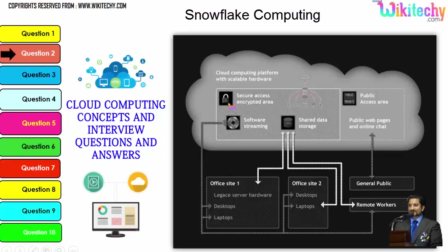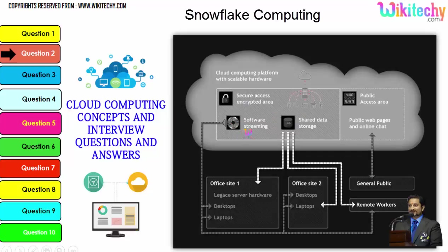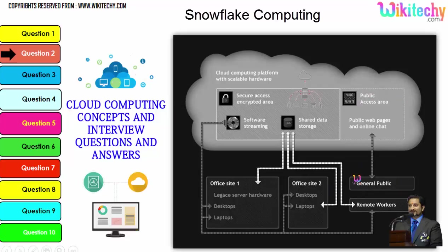Cloud computing has a public access area — public web pages for end users — and apart from this, you are able to see secure data access, shared data storage, and software streaming. Companies can use it as a private kind of cloud, and the public can use it to access web pages or websites. This is how cloud computing is working.